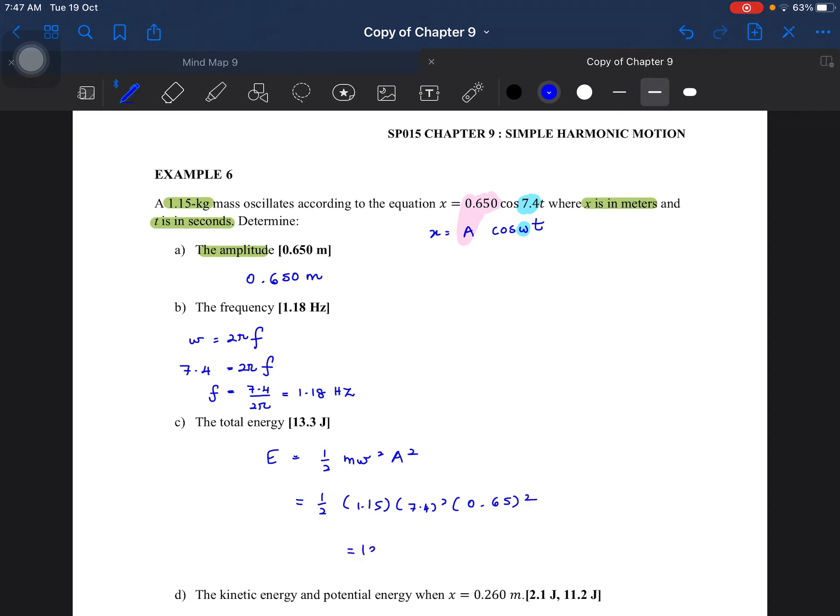So notice that it's in joule, right? Bila joule, SI unit untuk energy ialah satu sahaja, iaitu joule. Jadi bila kamu masukkan nilai mass, dia mesti dalam SI unit kilogram. Omega mesti dalam radian per second. Amplitude ni wajib dalam meter.